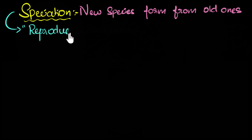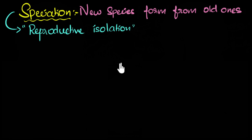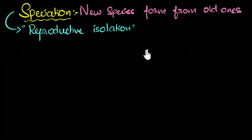Coming back to our question — how do new species get formed? The major requirement for this is something called reproductive isolation. This basically means we need at least two groups of the same species that are not reproducing with each other. If you can maintain two groups which do not reproduce with each other, then as time passes, they will both evolve separately into two different species. Let's look at a particular example.